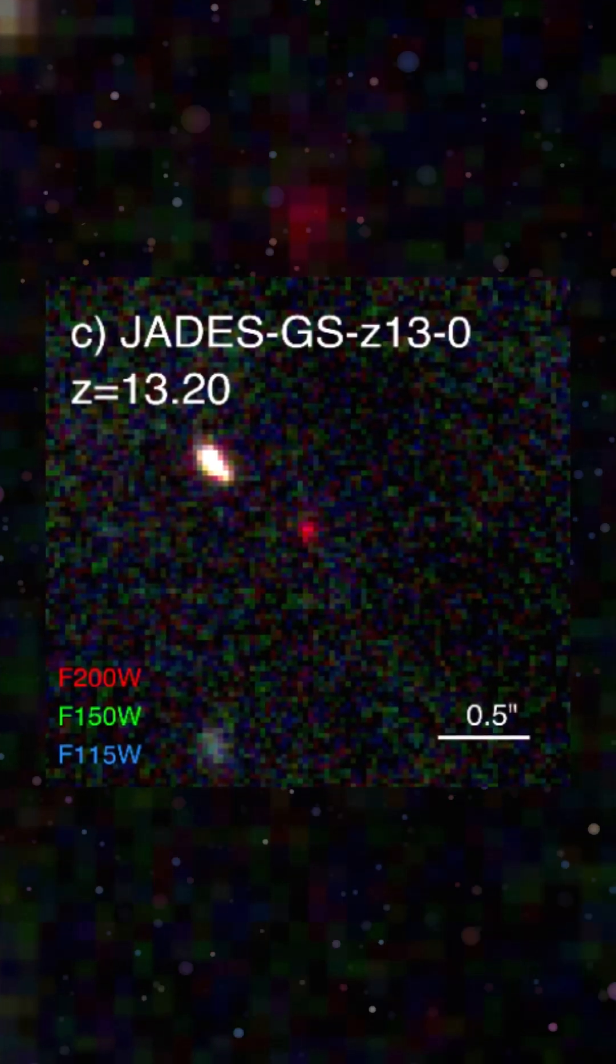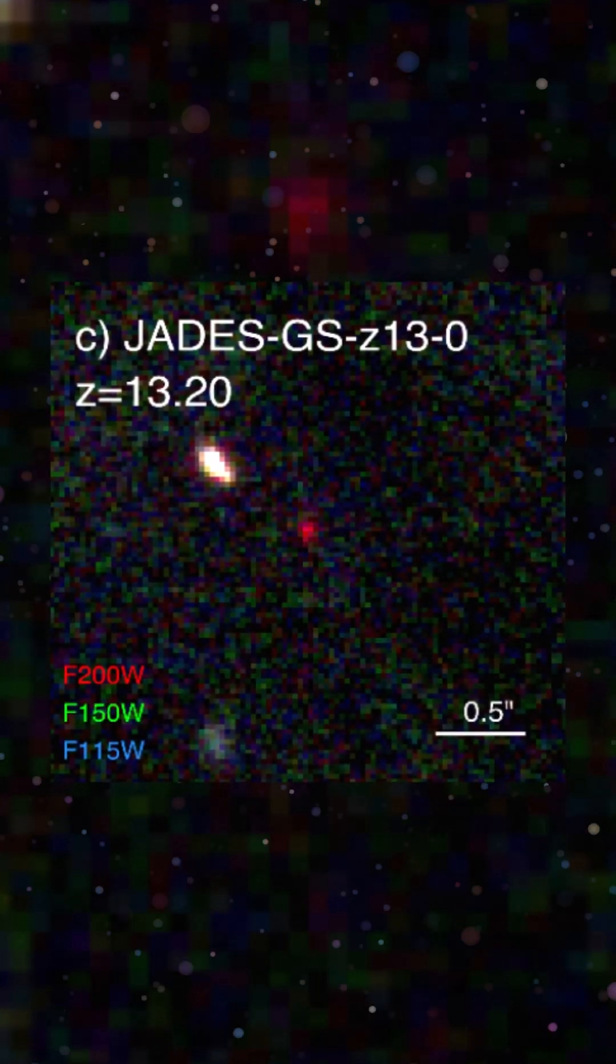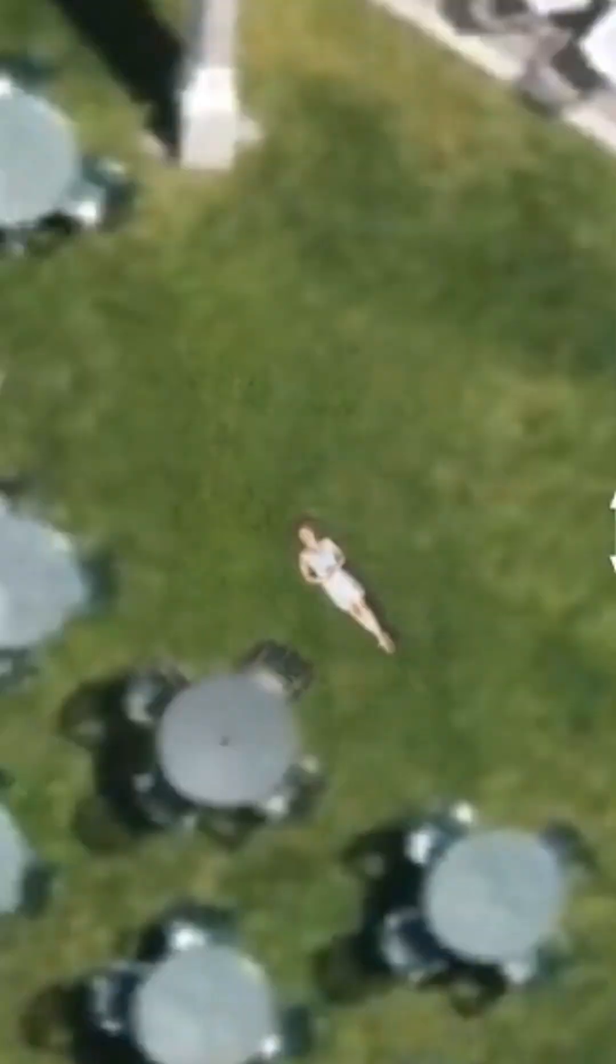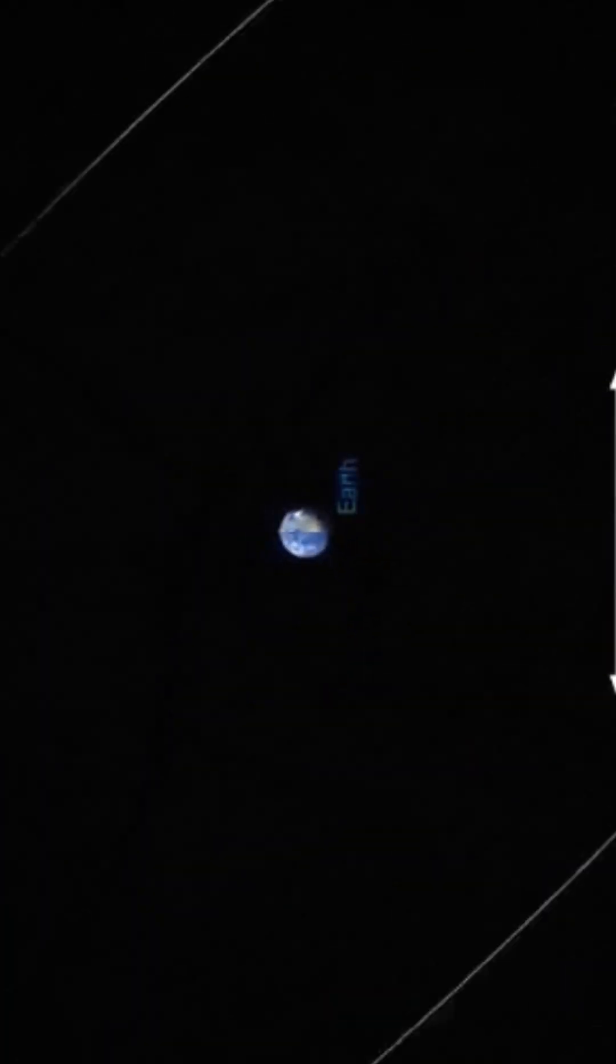Surprisingly, some galaxies, like this one, Jade's GSZ130, appear to be twice the size of other galaxies, proving how things at extreme distances can appear much larger than expected in the expanding universe.